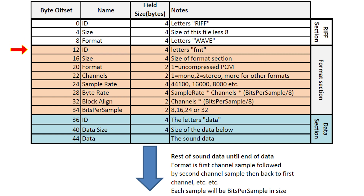Moving on to the format section, the ID is four bytes long, but all the first three are used for the letters FMT. We then make some other checks. At offset 20 — that is decimal 20 — we have the format of our WAV file. We're only going to accept uncompressed PCM and reject otherwise, so this should be a one for us. Anything else, it's a no-no.